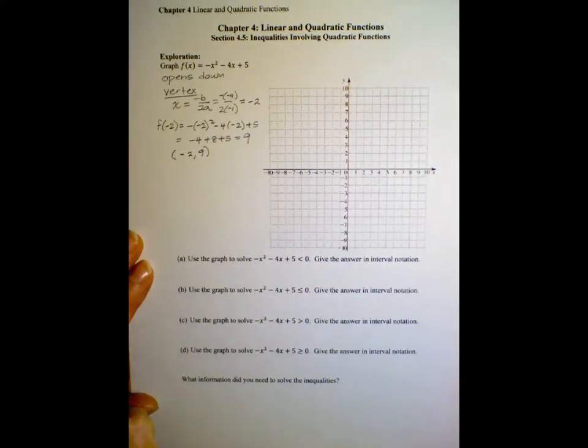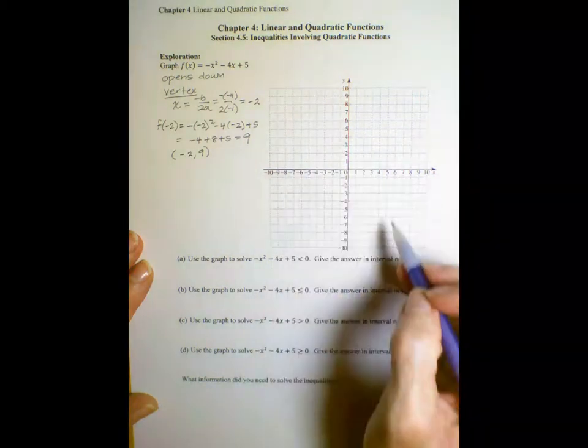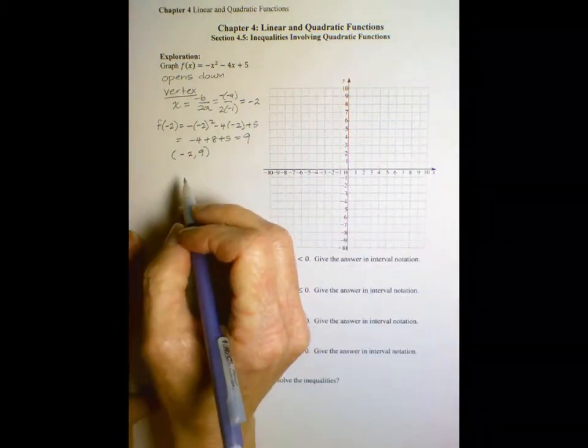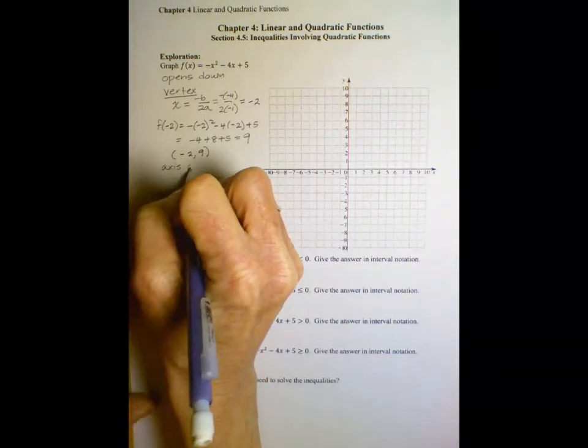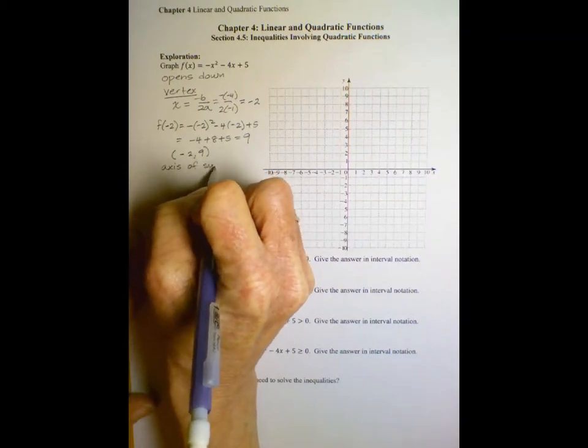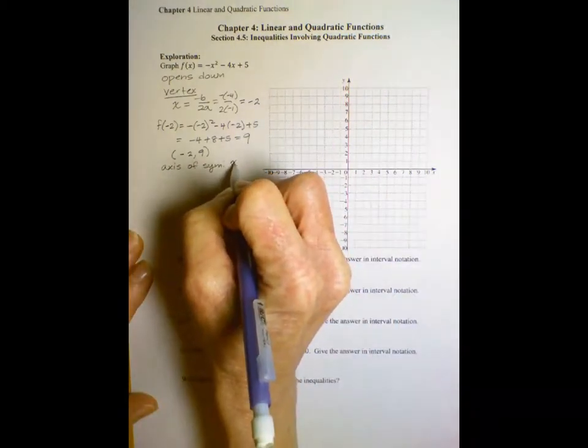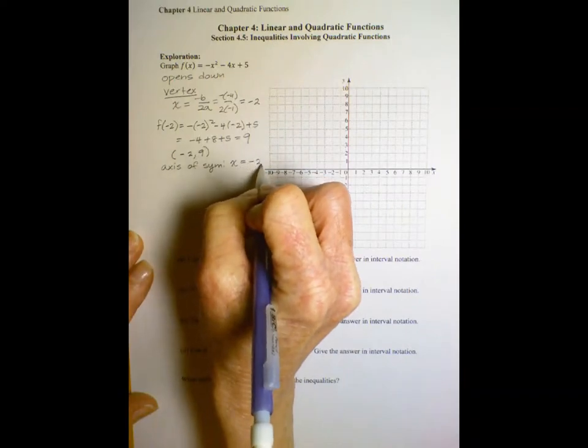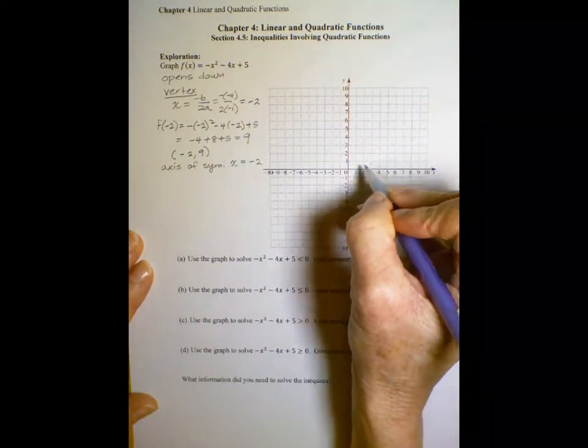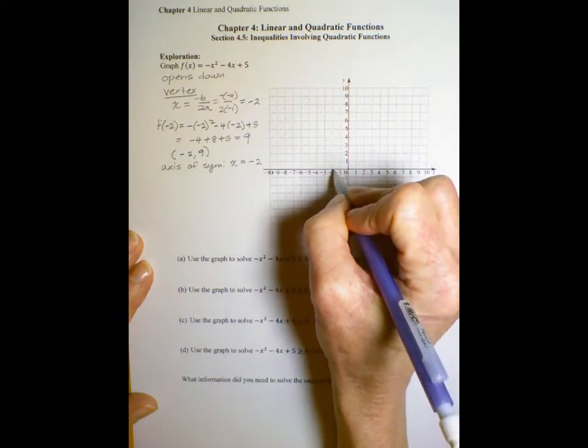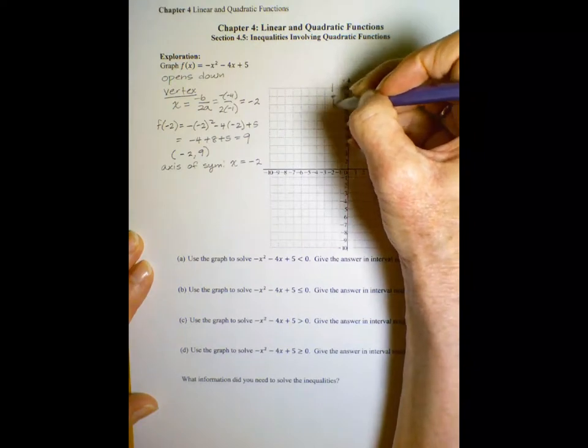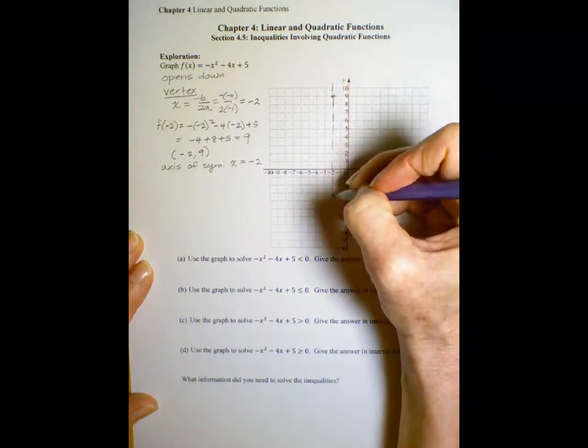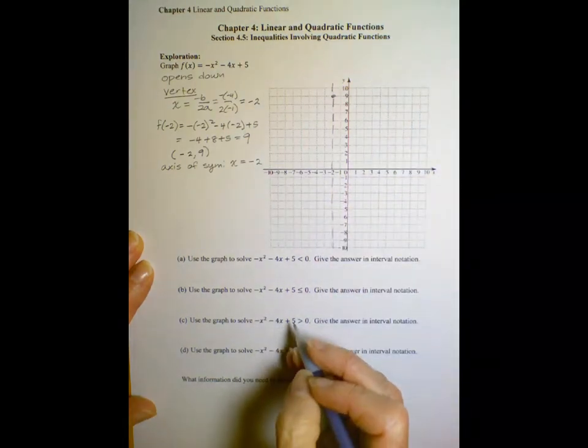That's our, would it be a maximum point or a minimum point? It opens down so it's going to be a maximum point. The axis of symmetry is the vertical line x equals negative 2. So let's see what we have so far. The vertex is at negative 2 positive 9 and our axis of symmetry is this vertical line.